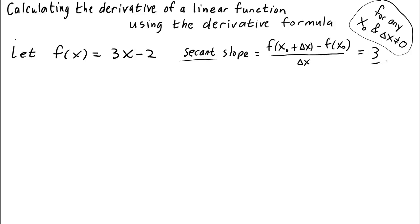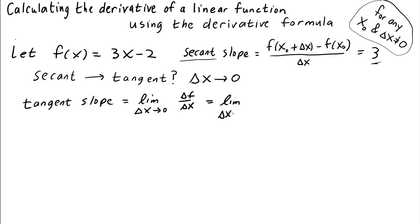So the slope of any secant line is 3. But we need the slope of the tangent line because that's the derivative. How do you go from the slope of the secant to the slope of the tangent? You need to let delta x go to 0. So we have to let delta x be smaller and smaller and see what value we get for the secant slope as delta x gets closer and closer to 0. So the tangent slope is equal to the limit as delta x goes to 0 of the secant slope, which we could write as delta f over delta x, change in output over change in input, which is the limit as delta x goes to 0 of our secant slope formula.